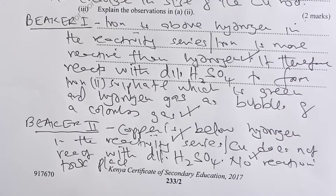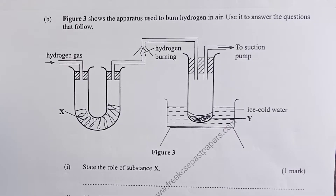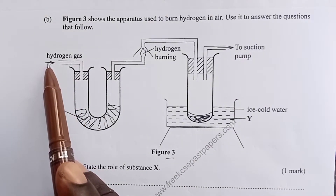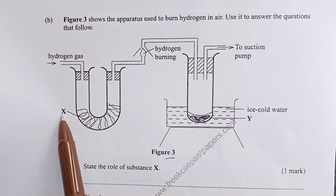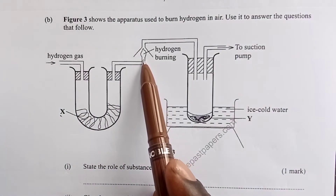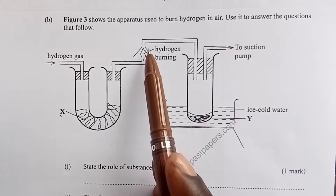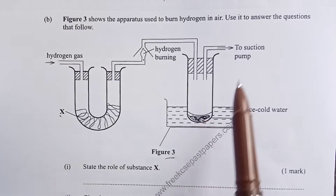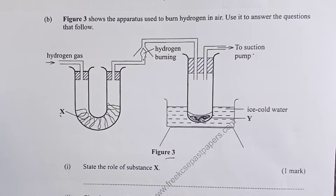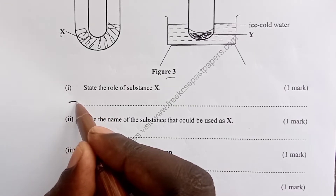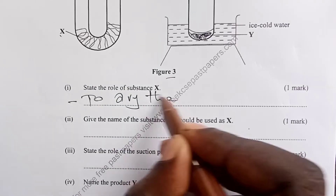Moving to part B, which involves burning hydrogen in air — oxidizing hydrogen in oxygen to form water as shown in Figure 3. Wet hydrogen is first dried by a solid drying agent packed in a U-tube, referred to as X. Once dried, the hydrogen is burned in oxygen to produce steam, which is then condensed. A suction pump draws the products into a boiling tube. The role of X is to dry the hydrogen gas, for one mark.